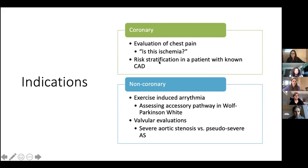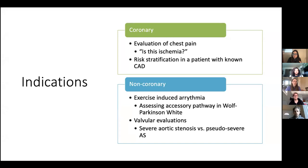For non-coronary reasons, you can assess for exercise-induced arrhythmia. This is also done for patients with Wolf-Parkinson-White to assess their accessory pathway. You can also do valvular evaluation — a classic example is distinguishing between severe aortic stenosis and pseudo-severe aortic stenosis. In patients with reduced ejection fraction or systolic heart failure, their echo can make it look like they have really severe AS based on low flow. A dobutamine stress test can help distinguish by augmenting their EF and taking better measurements of whether it's the systolic dysfunction or the valve limiting flow.